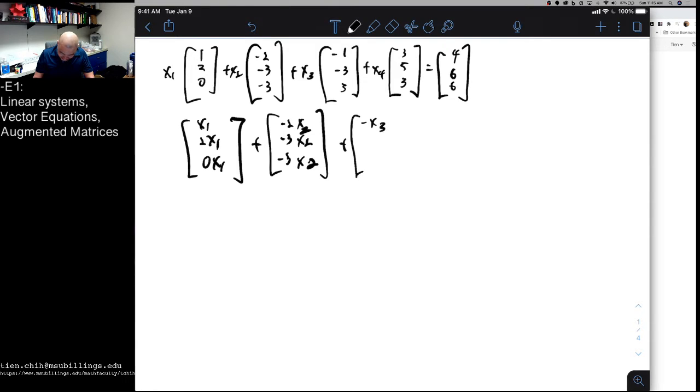So, minus x3, minus 3x3, 3x3, plus 3x4, 5x4, 3x4, and all of this equal to 4, 6, 6.